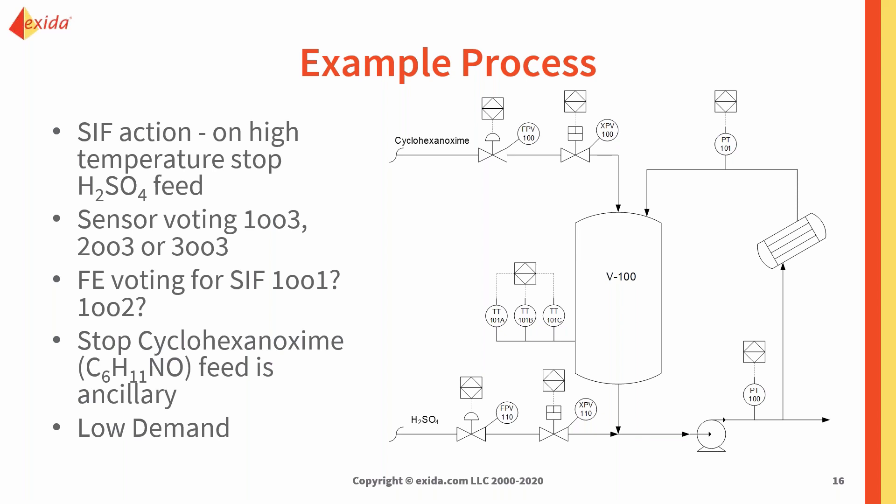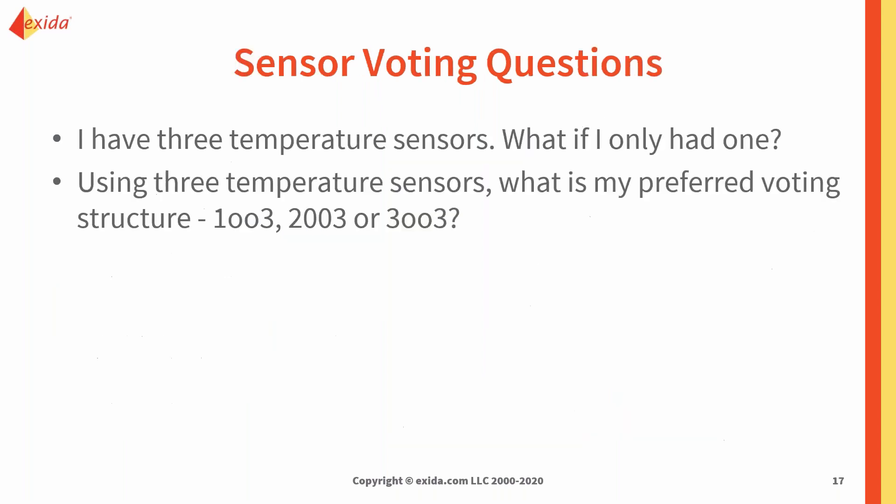We also have on our final elements an XPV in the sulfuric acid line — an on-off valve attached to the SIS — and an FPV, a control valve primarily used for control in the basic process control system. We'll look at whether the FPV can also be used to help support the safety interlock. We are operating in low demand mode. With the three temperature sensors, we'll first look at what if we only had one, then decide if we need to use the redundancy of three and what the appropriate voting would be.